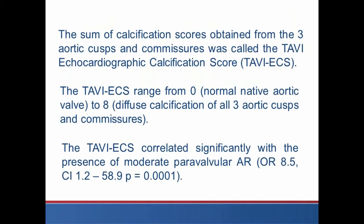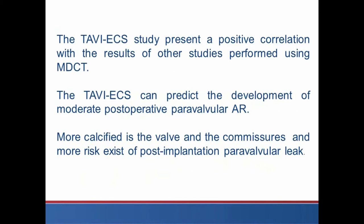The aortic commissures and the three aortic valve cusps were the anatomical structures identified as statistically associated with post-implantation paravalvular aortic regurgitation. The sum of calcification scores obtained from the three aortic cusps and commissures was called the TAVI Echocardiographic Calcification Score, ranging from 0 — normal aortic valve — to 8, representing diffuse calcification of all three aortic cusps and commissures. The TAVI echocardiographic score correlated significantly with moderate paravalvular aortic regurgitation and can predict its post-operative development. More calcified the valve and commissures, the greater the risk of post-implantation paravalvular leak.